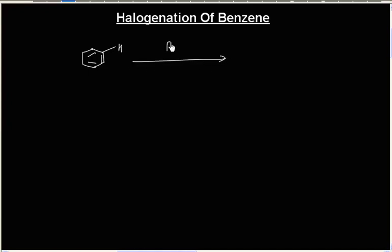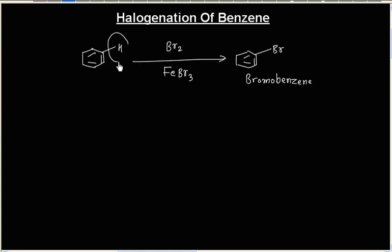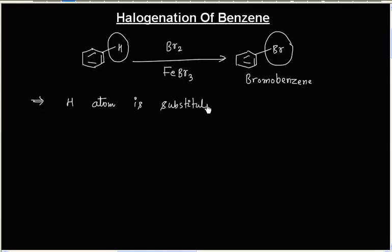When benzene reacts with bromine in the presence of FeBr₃, it forms bromobenzene. In this reaction, a hydrogen atom is substituted by a bromine atom. This reaction is an example of electrophilic aromatic substitution.